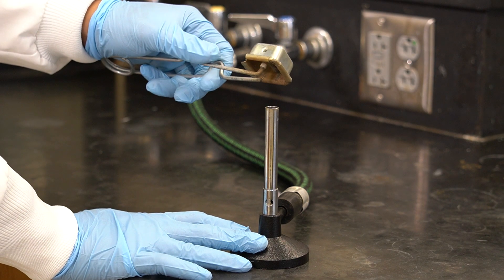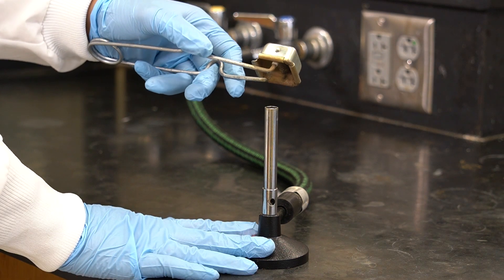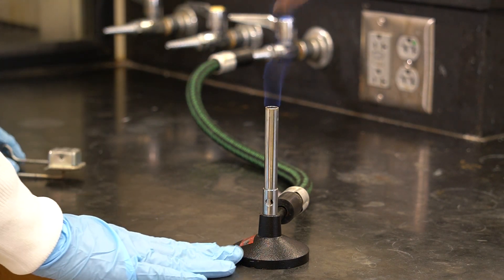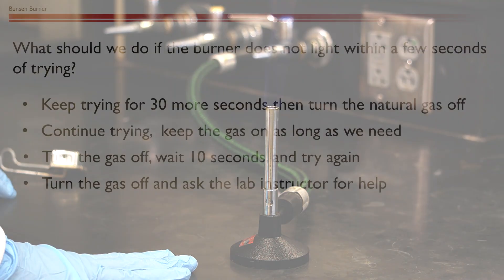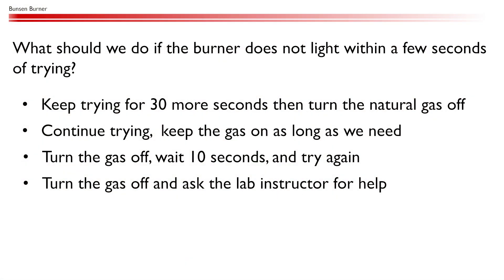Take the striker and place it over the barrel's opening. Strike to create sparks. It may take 4 to 5 sparks to ignite the flame. What should we do if the burner does not light within a few seconds of trying?